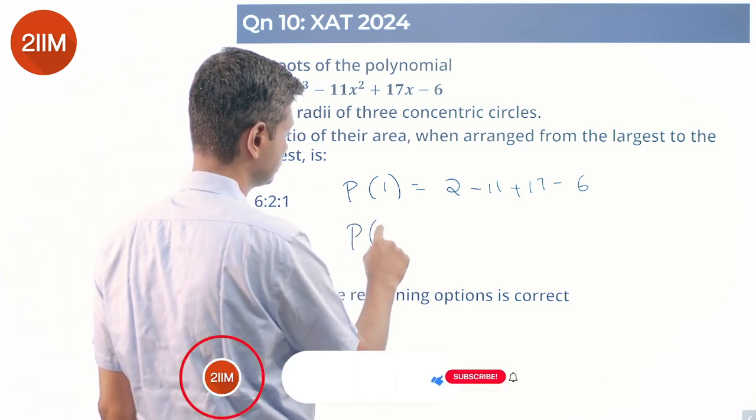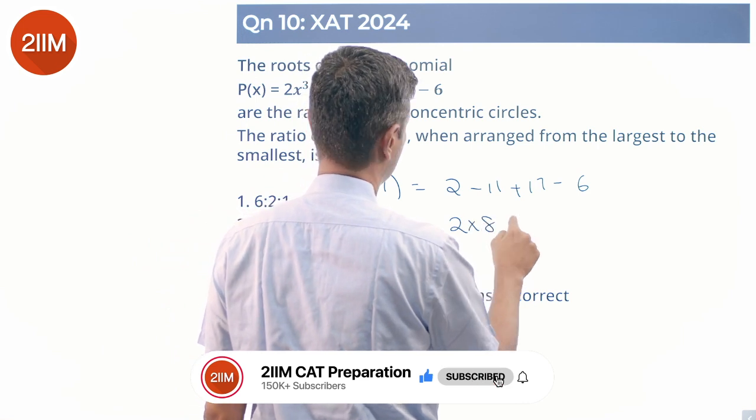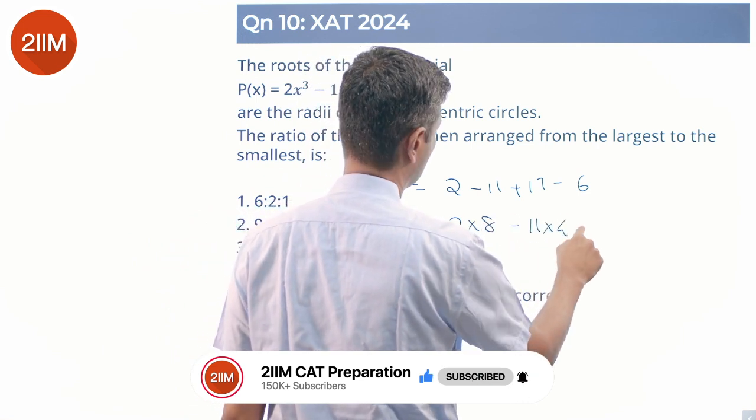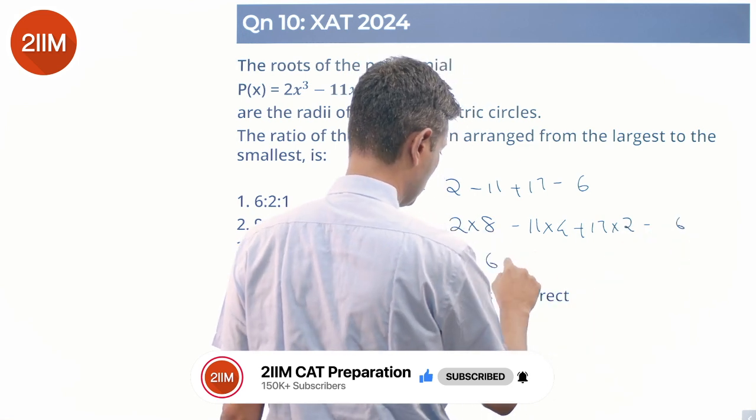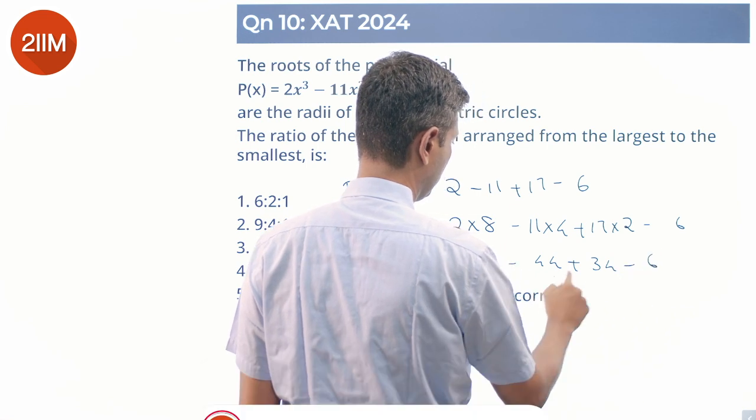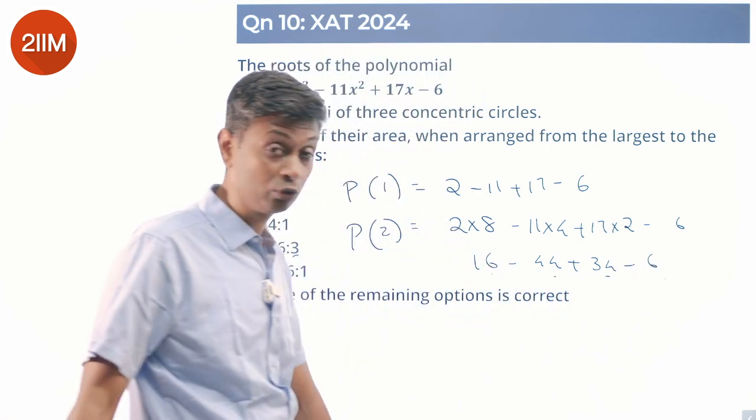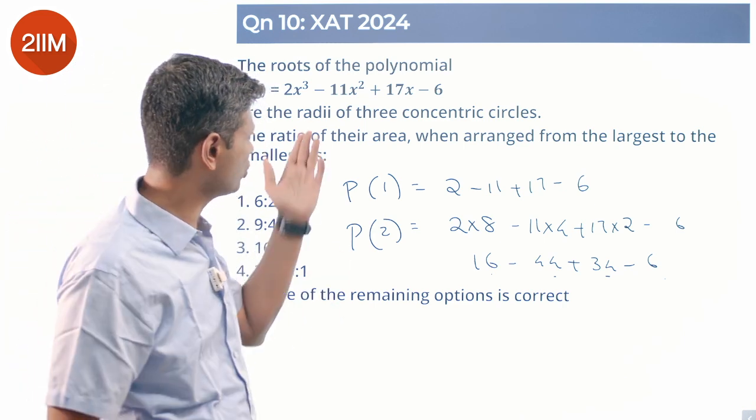What is P(2)? 2×8 - 11×4 + 17×2 - 6 = 16 - 44 + 34 - 6. These two add up to 50, these two add up to 50. P(2) = 0. So 2 is a root of this, x - 2 is a factor.